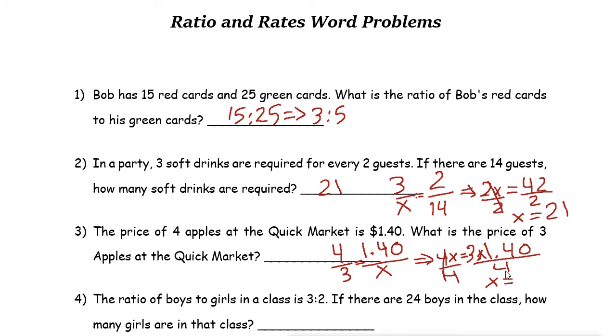3 times 1.40 is $4.20. So it is here. If you multiply you get $4.20.